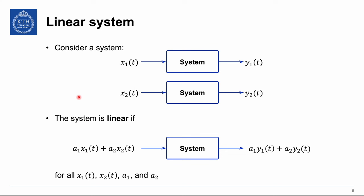We start with the concept of a linear system. Consider a system that takes an input x1 of t and produces output y1 of t. If we send another input x2 of t we get y2 of t. The system is linear if we take a linear combination — a summation of the two input signals multiplied with coefficients a1 and a2 — and the output is the same linear combination: a1 times y1 of t plus a2 times y2 of t. This should hold for any a1 and a2, any x1 and x2. Otherwise the system is non-linear.